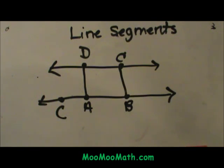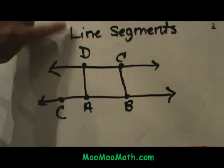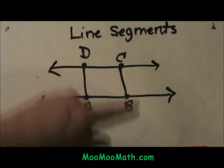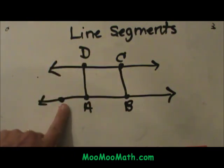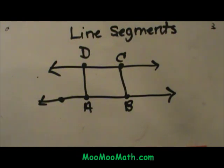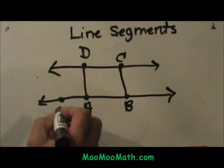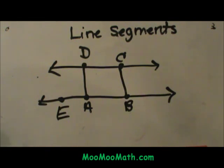Welcome to Moo Moo Math. Today we're going to look at naming line segments. I've got a drawing up here with points A, B, C, D, and let's add an E down here. We've got five points.